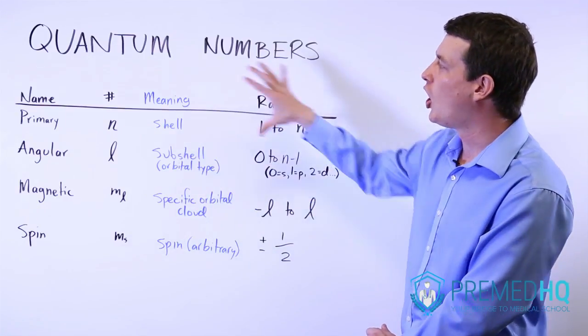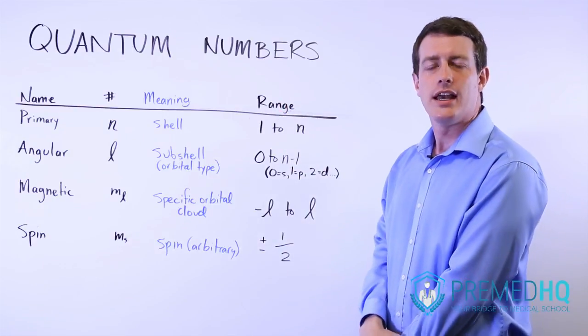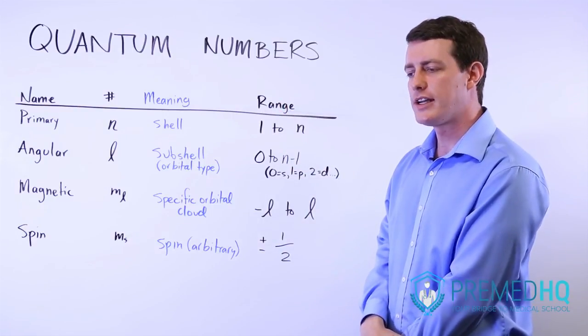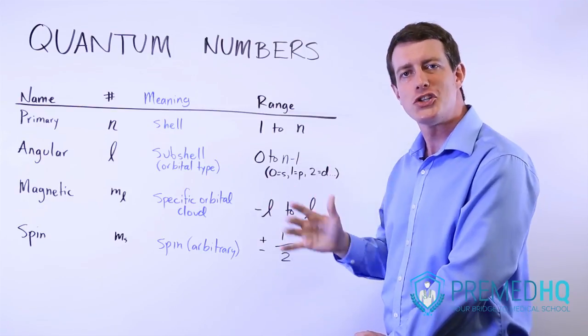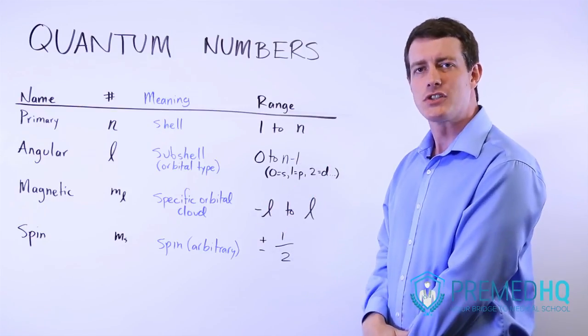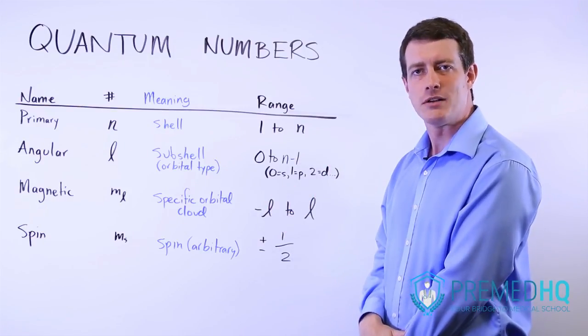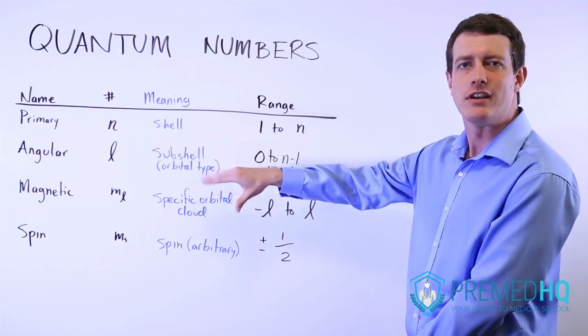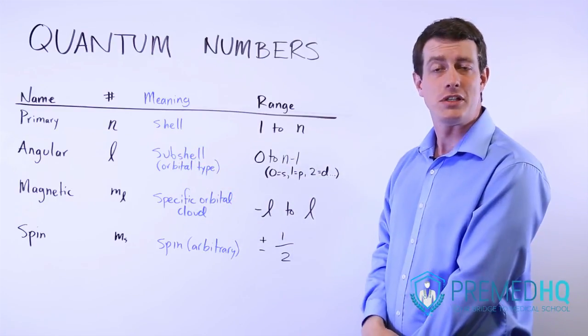And once you understand what all of these quantum numbers mean, it allows you to very quickly identify which electron is being referred to. And it can help you solve some problems about the nature of the atom if the quantum numbers are given, but the atom itself is not described to you in a problem.